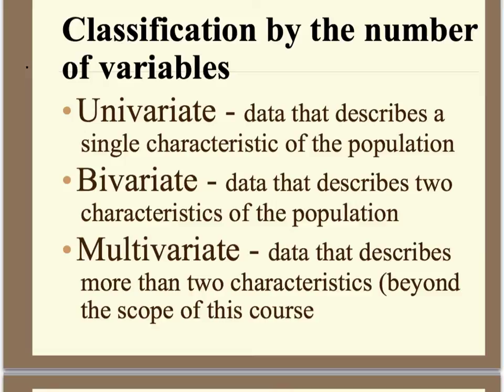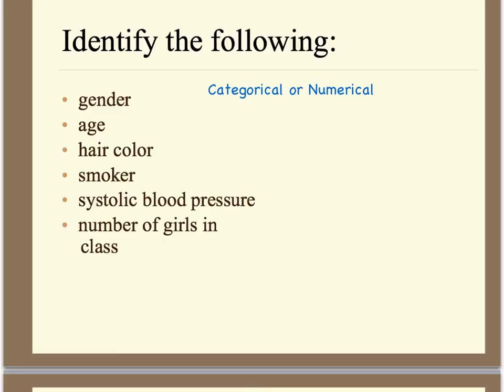We can also classify data by the number of variables we're discussing. Univariate is data that describes a single characteristic. Bivariate describes two characteristics. And there is multivariate for more than two, but that's not something we're going to discuss in this course this year.